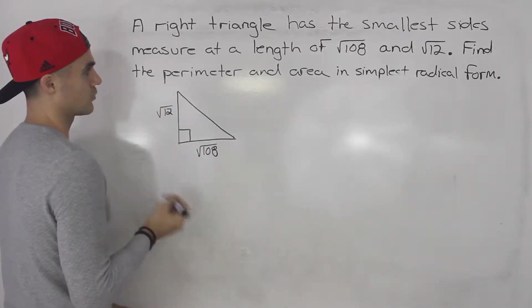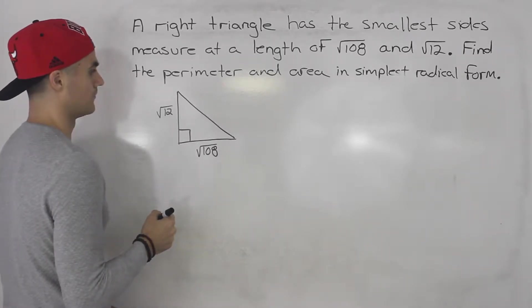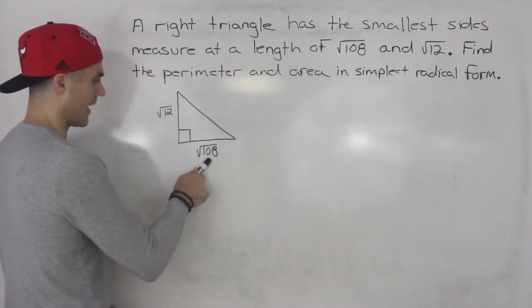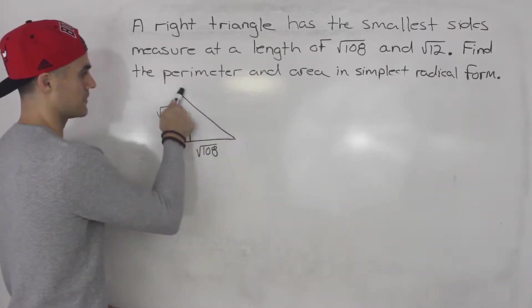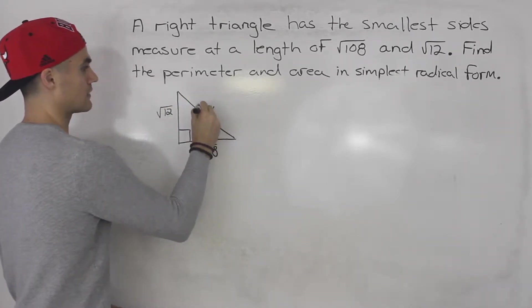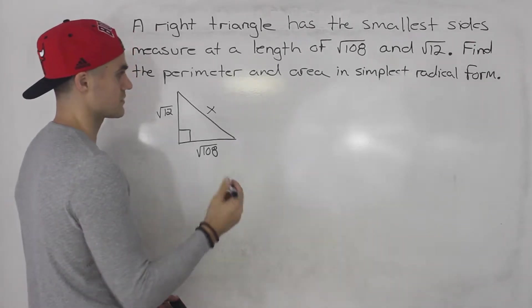We're asked to find the perimeter and area in simplest radical form. Well, let's start off with the perimeter. In order to find the perimeter, we're going to have to add all three sides. But notice this side we don't have at the moment. So we've got to find this side here, x, the hypotenuse. And we can use the Pythagoras theorem to do that.